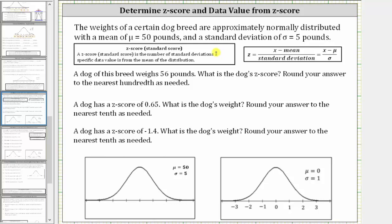The weights of a certain dog breed are approximately normally distributed with a mean of 50 pounds and a standard deviation of five pounds. Let's begin by labeling the normal distribution shown below. Because the mean is 50, it is at the center of the distribution, and the horizontal axis has a scale equal to the standard deviation, which is five.